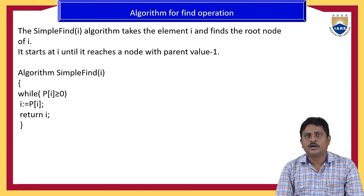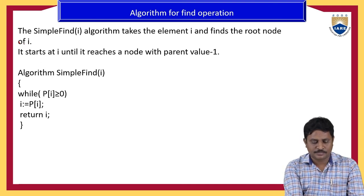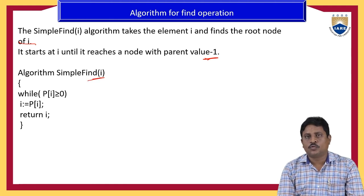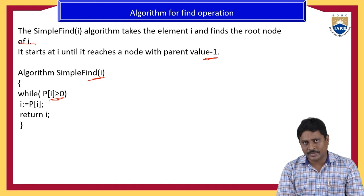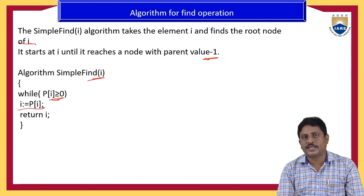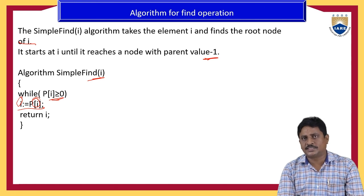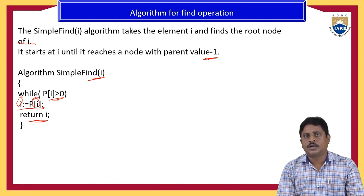Algorithm for find operation — simple find of i: the algorithm takes an element and finds the root node of i. It starts at i and traverses until it reaches a node with parent value minus one. While P of i is greater than or equal to zero, set i equal to P of i. If the searching element matches in the tree, we return i. If the element is not found we return minus one, meaning the element is not found in the set.